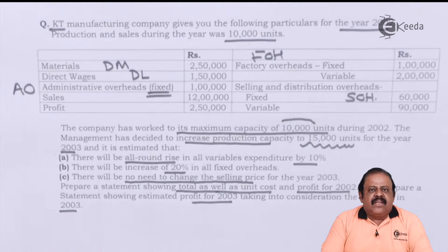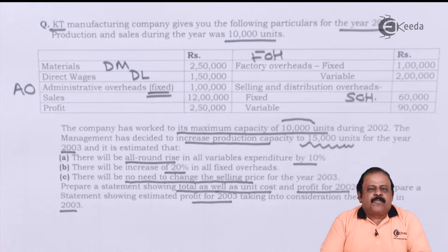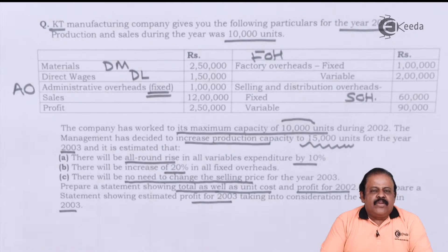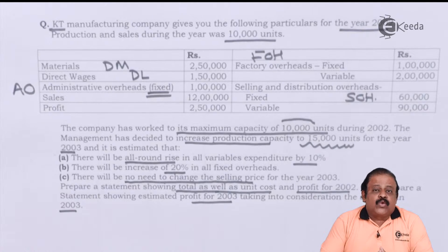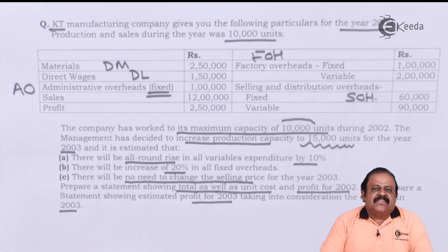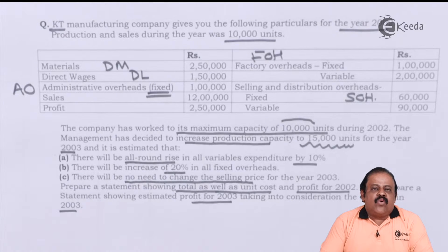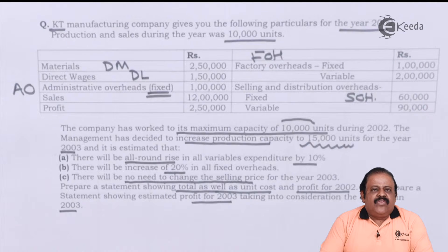Overheads means expenses. As you undertake production you are required to incur expenses — we call these overheads. As production rises, these expenses need to rise. However, the nature and character of certain expenses is that they are periodical, meaning they are linked to a period like a month. For example, office rent — we pay, say, ₹10,000 every month, irrespective of the output.